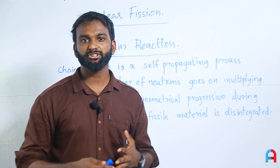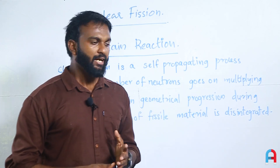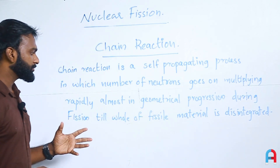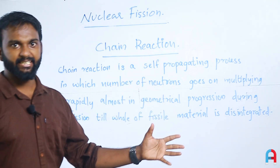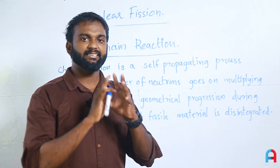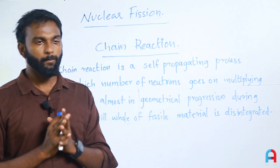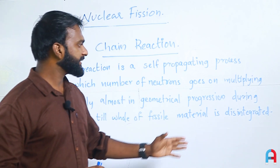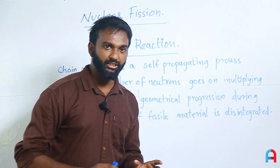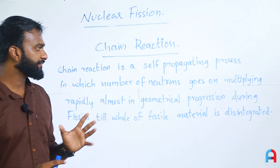We call this geometrical progression, or GP. The GP increases such that the whole fissile material is completely disintegrated. This nuclear fission continues — that is what we understand by the definition of chain reaction.